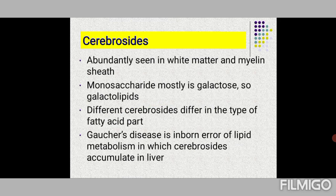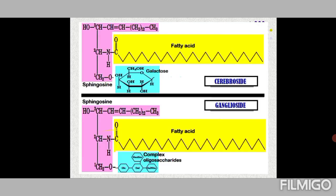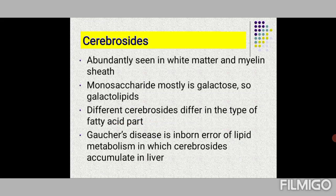Cerebrosides are abundantly found in white matter and myelin sheath; the monosaccharide is mostly galactose, sometimes glucose, so they are called galactolipids. Different cerebrosides differ in their fatty acid component. Gaucher's disease is an inborn error of lipid metabolism in which cerebrosides accumulate in the liver. Similarly, Tay-Sachs disease is an inborn error where gangliosides accumulate in the brain.